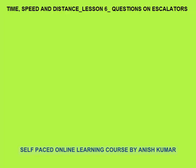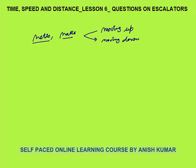Hello, this is Time, Speed and Distance lesson 6. In this I will discuss questions on escalators. You must have seen escalators in metros and malls. There are two types: moving up — from ground floor to first floor or first floor to second floor — or moving down, from second floor to first floor.